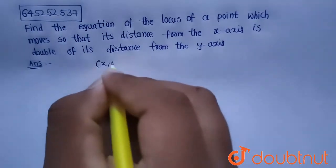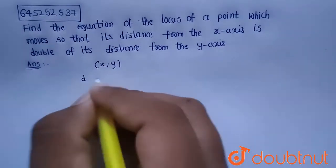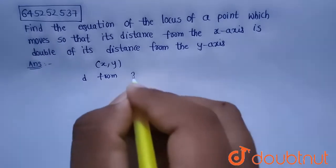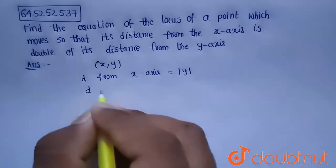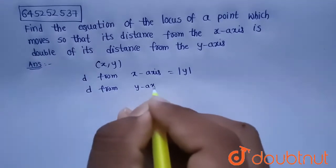Suppose there is a point (x, y). Then distance of the point from x-axis is nothing but |y| and distance from y-axis is nothing but |x|.